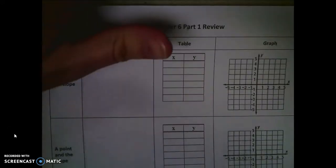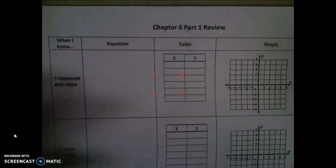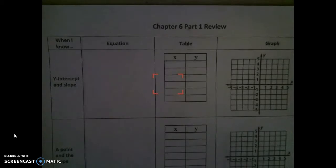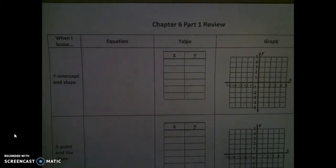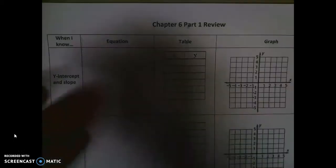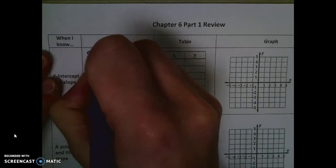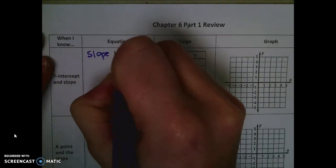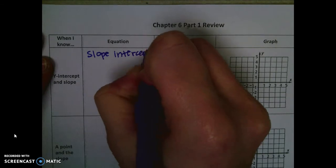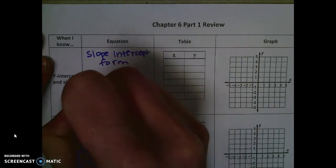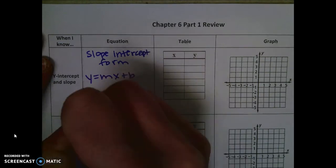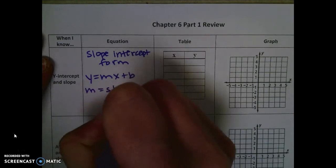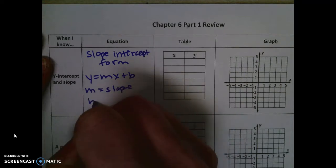This is a review of the formulas and equations you'll need to know for Chapter 6. So when you're given the y-intercept and the slope, the equation you're going to use is slope-intercept form, which looks like y equals mx plus b, where m is the slope and b is the y-intercept.